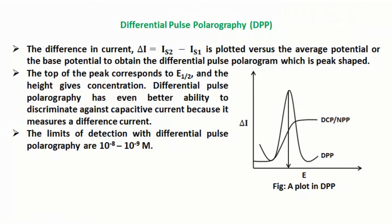The top of the peak corresponds to E-half, and the height gives the concentration. Differential pulse polarography has even better ability to discriminate against capacitive current because it measures a difference current. The limits of detection with differential pulse polarography are 10^-8 to 10^-9 molar.